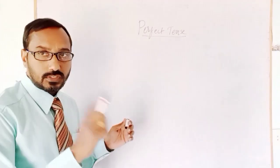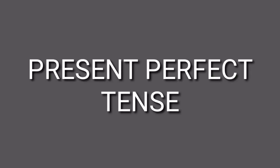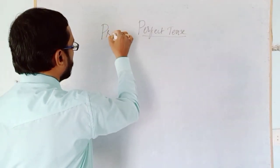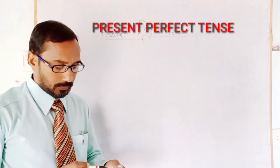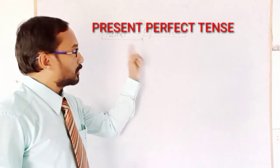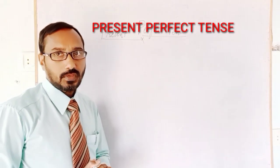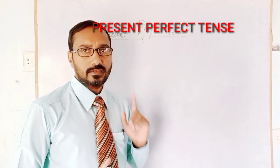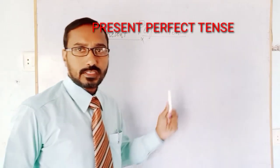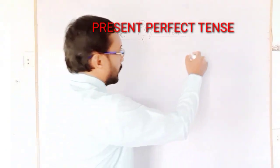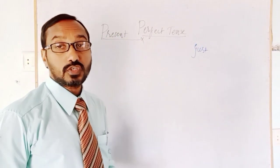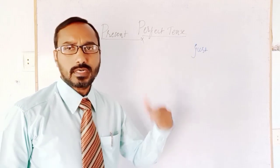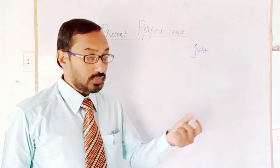Let us discuss about present perfect tense. What do you mean by present perfect tense? It shows an action just completed — just completed or recently completed, just now completed, already finished.